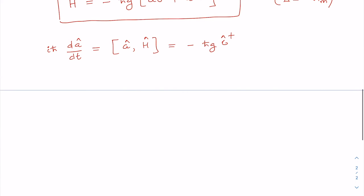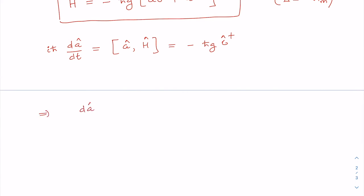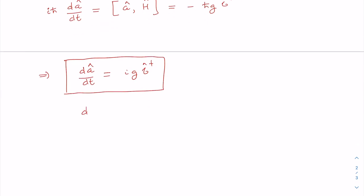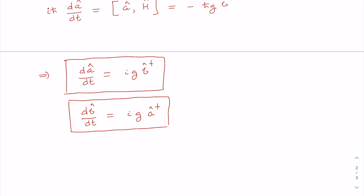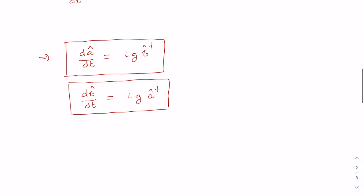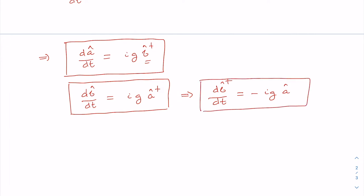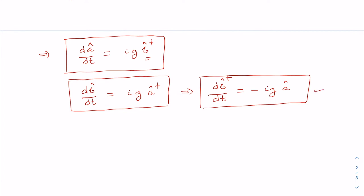The Heisenberg equation for mode a gives: da/dt = i z b-dagger. Similarly, we get the equation for mode b: db/dt = i z a-dagger. Taking the conjugate of the second equation gives: db-dagger/dt = minus i z a. Now let us solve this coupled set of equations.